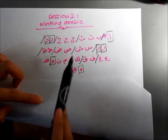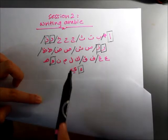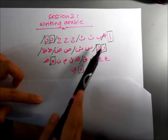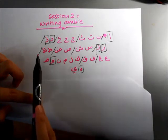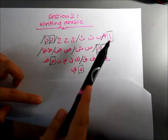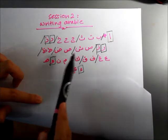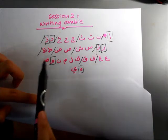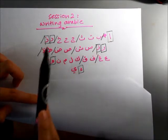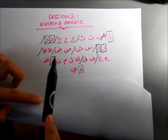As you can see here — Alif, Ba, Ta, and so on until Ya — they are all written from right to left. Of course, each letter exists on its own separate form. Now, how do we write them when we join them together?